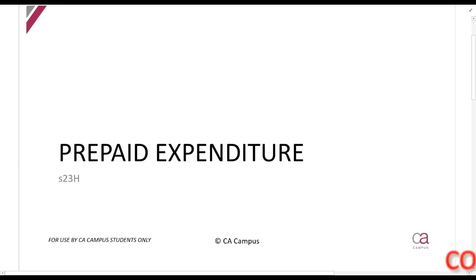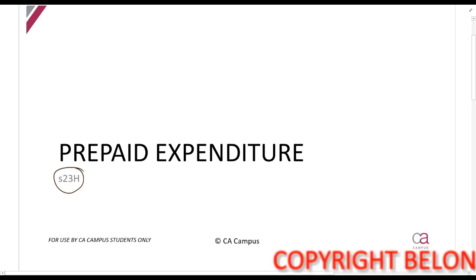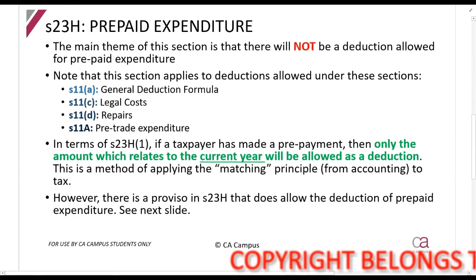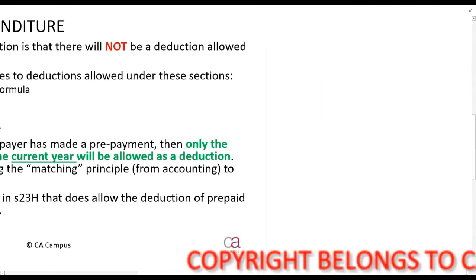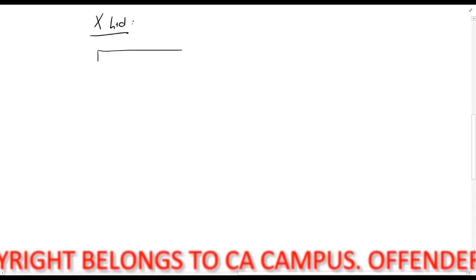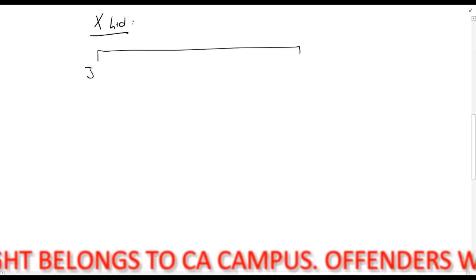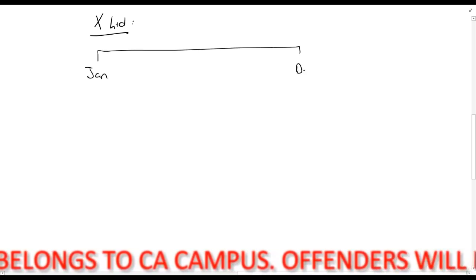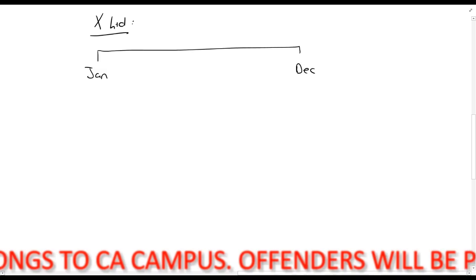We are now going to look at Section 23H, an important section that's also popular for exams. This is to do with prepaid expenditure. Let's quickly talk about prepaid expenditure. Let's give ourselves a little company, X Limited. X Limited has a tax year, a financial year which is a tax year, that runs from January until December.